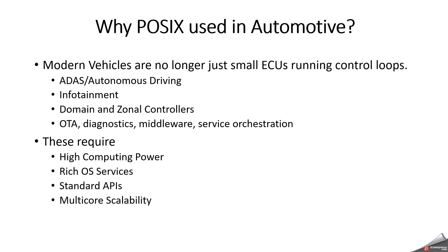Why is POSIX used in automotive? OSEK-based operating systems are used in Classic Autosar platforms — typically for body control modules, powertrain ECUs, chassis systems, and low-level safety ECUs. POSIX is used in modern vehicles where ECUs are no longer just small units running control loops — for example, ADAS domain controllers, infotainment systems, central compute ECUs, and zonal controllers.